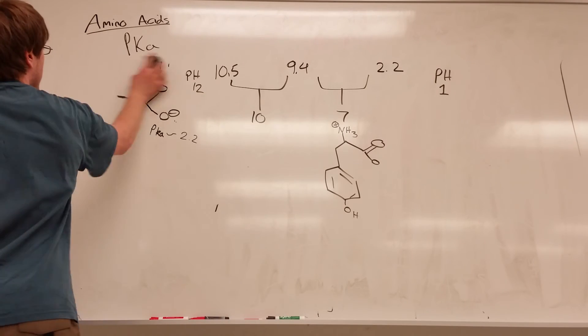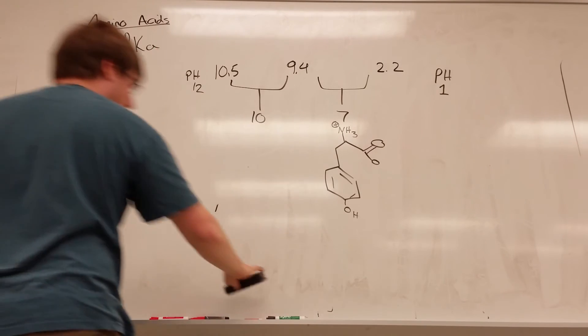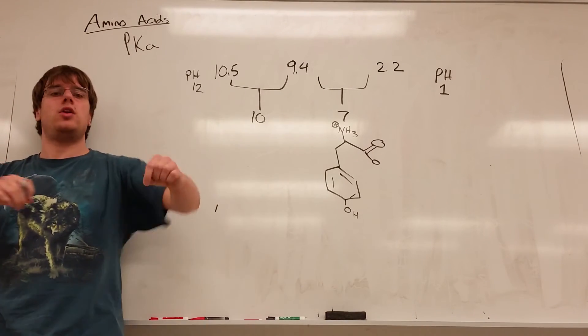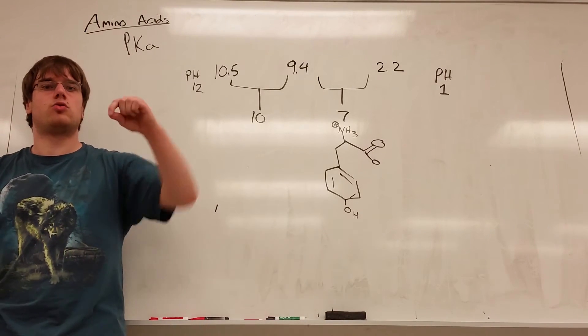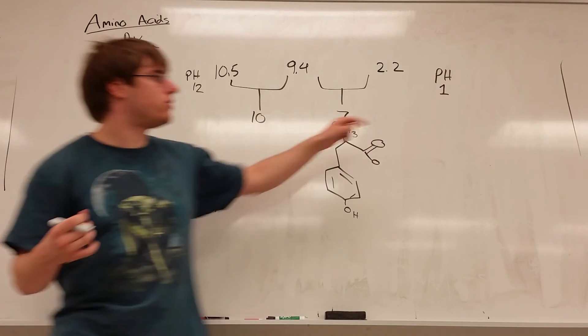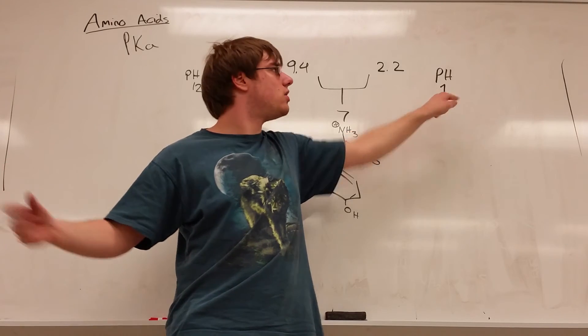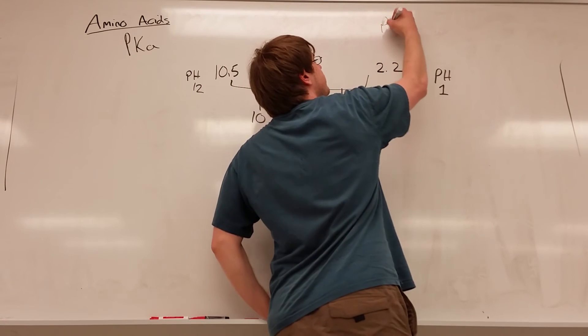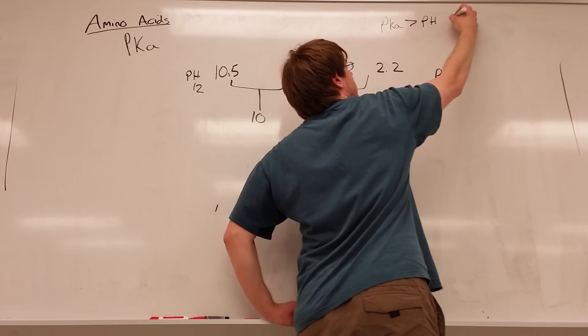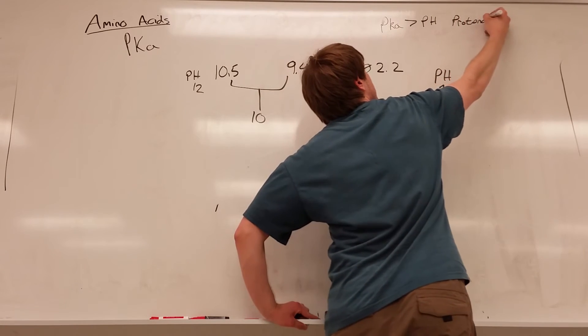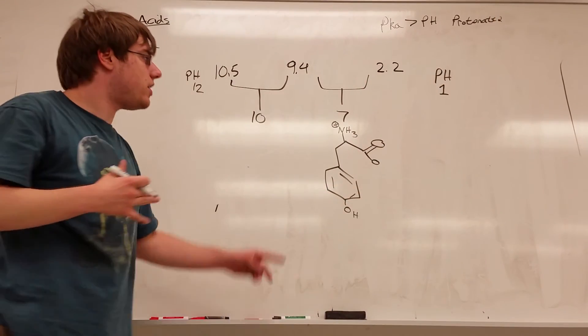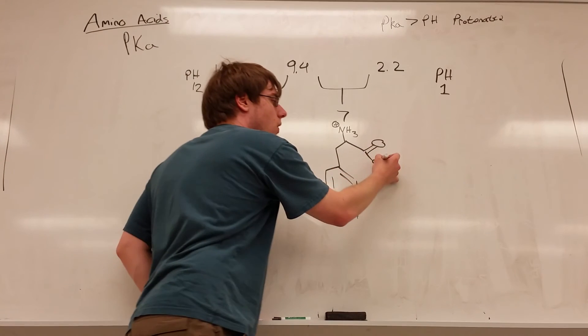A pH of 1 is the lowest pH, it's lower than every single pKa value, and if you go back to that chart that I erased, we said that when your pKa is greater than your pH, which would be for every case in a pH of 1, it's lower than all the other pKas, so when pKa is greater than pH, you're protonated.